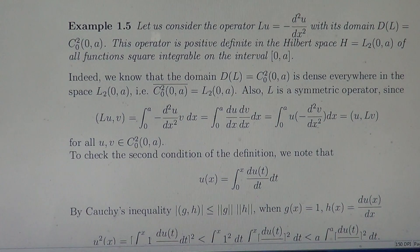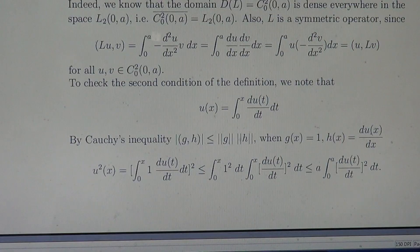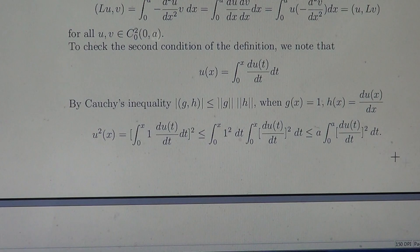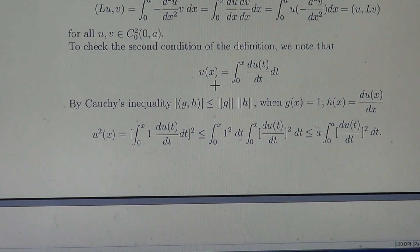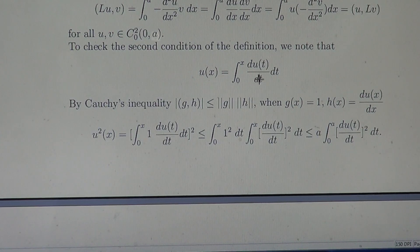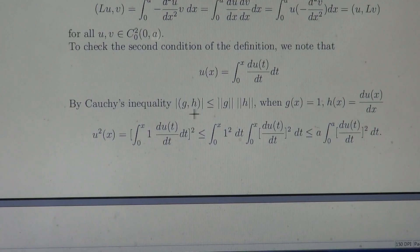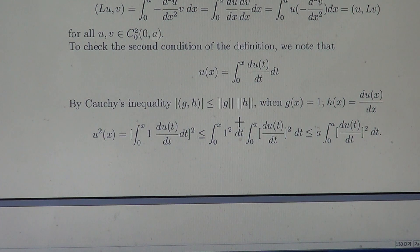To check the second condition, we note that U(x) can be represented as the integral from 0 to x of its derivative, by the fundamental theorem of calculus: U(x) equals the integral from 0 to x of U-prime(t) dt, since U(0) equals 0. By the Cauchy inequality, the absolute value of the inner product of two functions G and H in a Hilbert space is less than or equal to the norm of G times the norm of H. We take G equal to 1 and H(x) equal to the derivative of U.